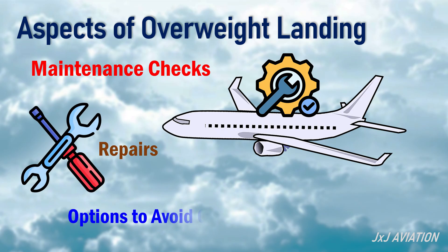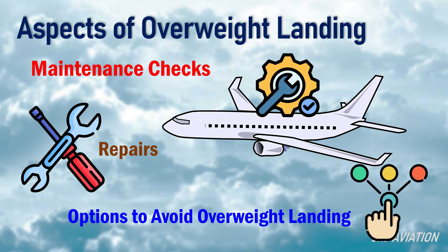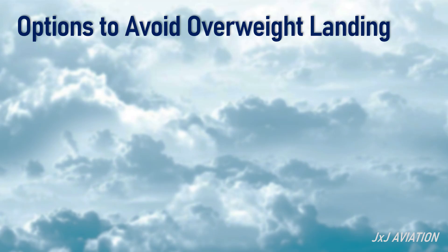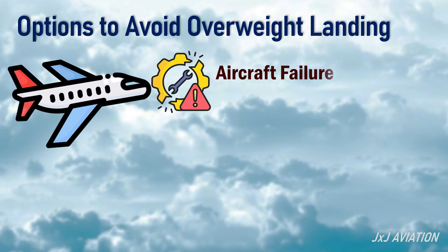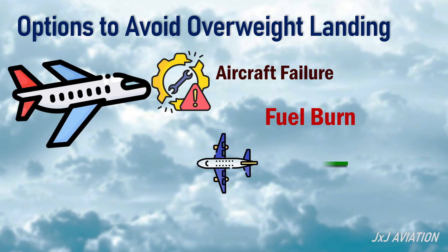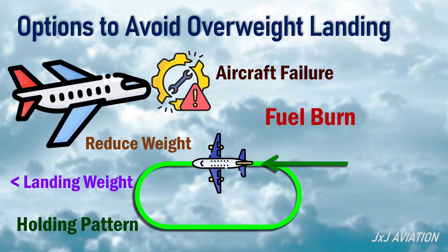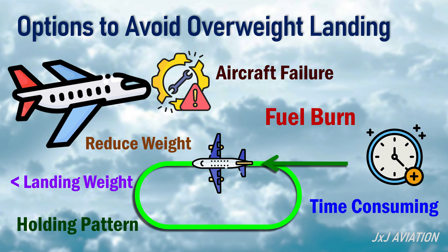Now let's look at some options, other than an overweight landing, and whether they will be considered after a failure in flight. Depending on the failure in the aircraft, there are other options to avoid an overweight landing. Fuel burn: the aircraft would enter a holding pattern to burn fuel, which reduces the weight of the aircraft below the maximum landing weight. However, this option consumes a lot of time.